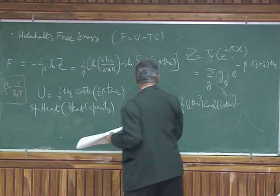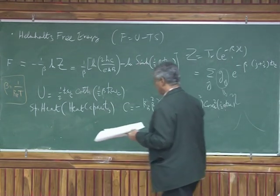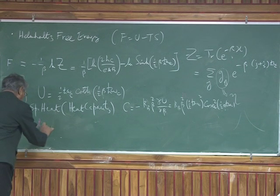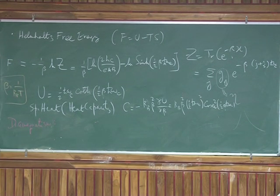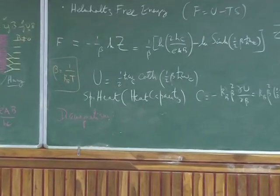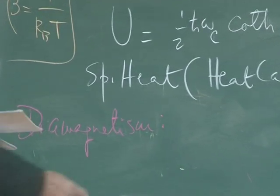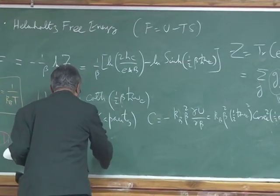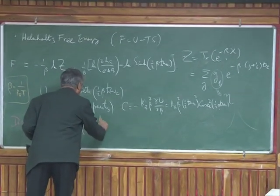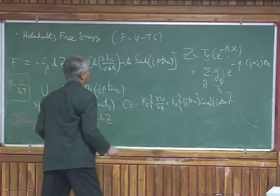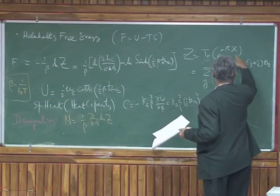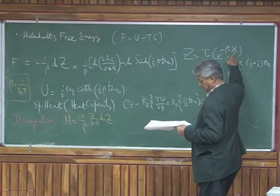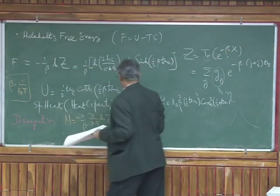And then the most important thing for our purposes is the diamagnetism. Diamagnetism or magnetization is dia. We're not talking about para or ferro because we're not talking about spin of the electrons. It's simply the magnetism coming from the orbital motion of the electron. And M is defined as, again, M is one over beta, del del beta, del del B log z. It's an identity because when you have z and you take dd beta, you pull down minus beta times the derivative of the Hamiltonian with respect to B.